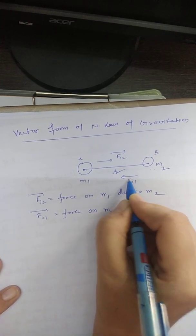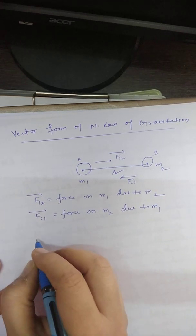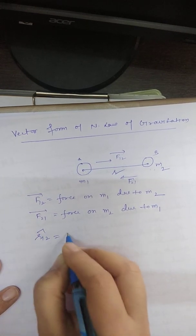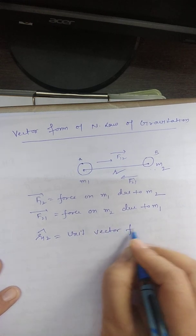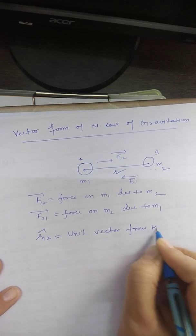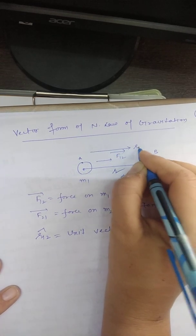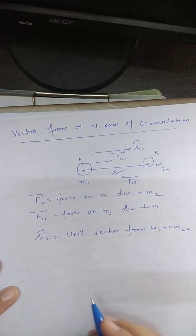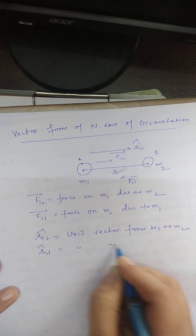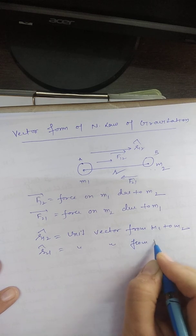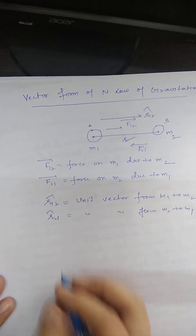Let r12 cap be a unit vector from M1 to M2, a unit vector whose magnitude is 1. R21 cap is a unit vector from M2 to M1.